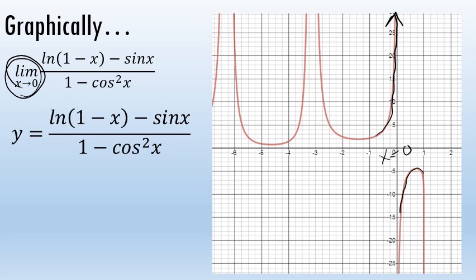Whereas from the right, the graph is approaching negative infinity. The only way that a limit can exist is if the graph is approaching the same point from both sides.